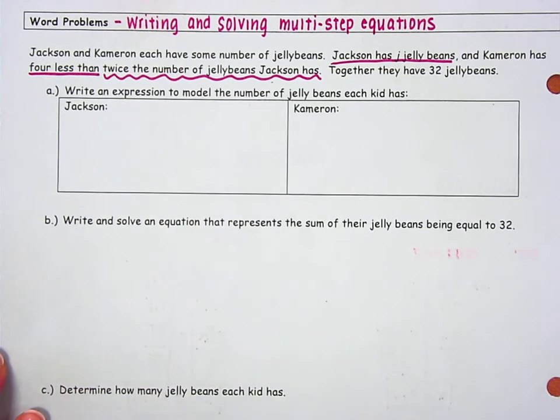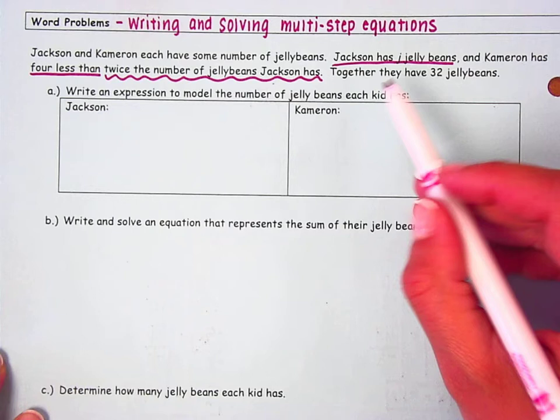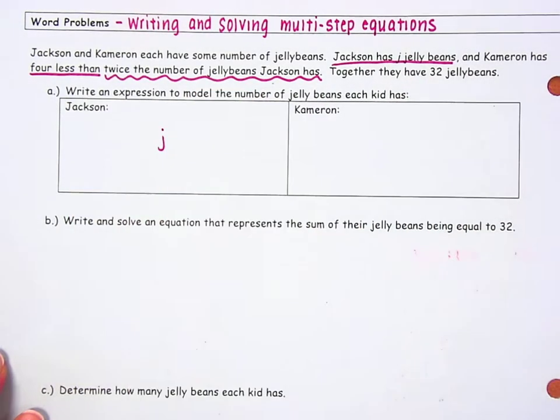I'm going to start by writing an expression, so no equal sign, that models the number of jelly beans that each kid has. We know that Jackson has J jelly beans, so the expression that's going to represent his jelly beans is J.